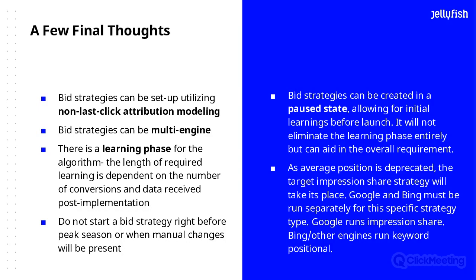Average position is being deprecated for Google, so you have to run Google and Bing separately in terms of those two different models. Google will run the impression share strategy, and Bing or other engines can run the keyword positional. That will have to be adjusted prior to August 15th. If your account team has not mentioned it to you, please reach out — make sure you're getting that discussion in place because August 15th is unfortunately quickly approaching. There's a lot of opportunity from automation, and hopefully you're able to take some of those learnings away.